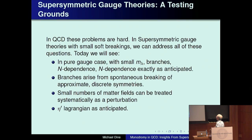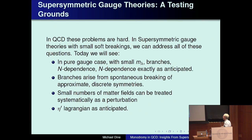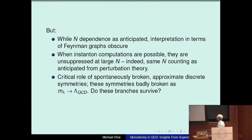Supersymmetric gauge theories provide a testing ground for a lot of these ideas. In real QCD these problems are hard, but in supersymmetric gauge theories with small soft breakings we can address all of them. In pure gauge theory with small m_lambda, one has branches and N-dependence of the type that's anticipated — and the N-dependence is exactly as Witten anticipated for the potential, for example for the eta prime. The branches arise from the spontaneous breaking of approximate discrete symmetries. Small numbers of matter fields can be treated systematically as a perturbation, and the eta prime behaves exactly as anticipated.